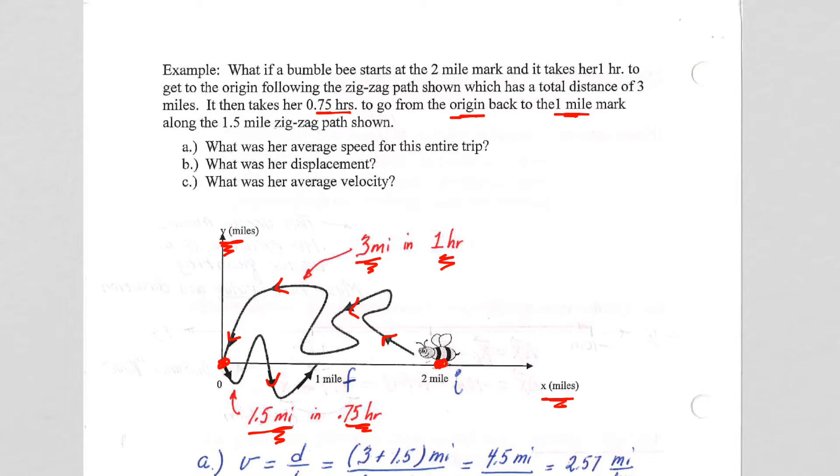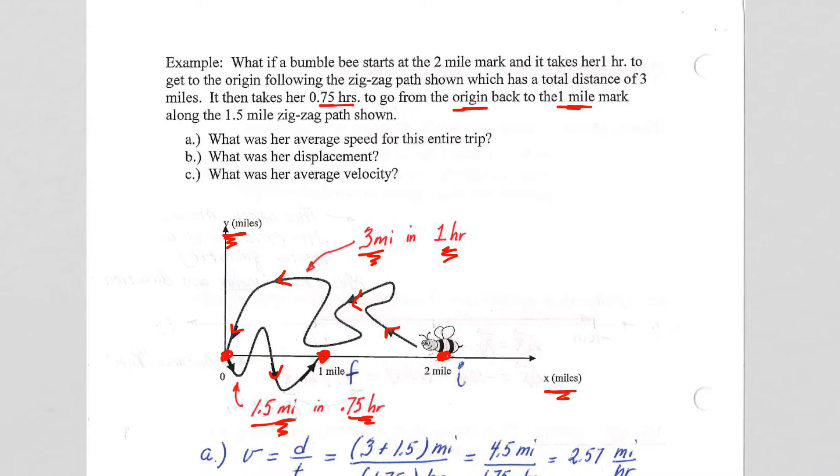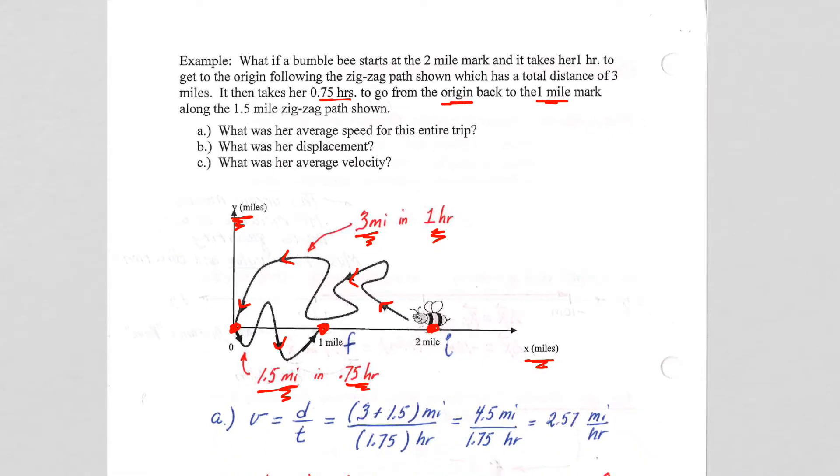So I haven't translated it into variables. She ends the trip at the one-mile mark here. So now let's start putting in some of our variables that we'll be able to use to problem-solve the problem. She starts at the two-mile mark. That's her initial x position, x_i. So the two-mile mark is her initial x position.